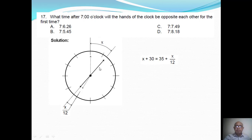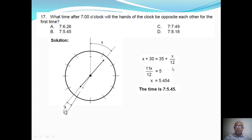So x plus 30 equals 35 plus x over 12. And from this equation, you can solve for x. So the time is 7:05:45.